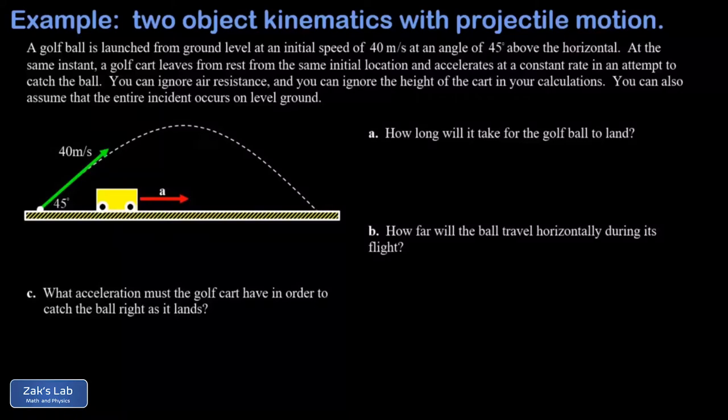In this video we're looking at a projectile motion problem combined with a 1D kinematics problem. The whole premise is that we hit a golf ball off the ground with a launch speed of 40 meters per second at a launch angle of 45 degrees.